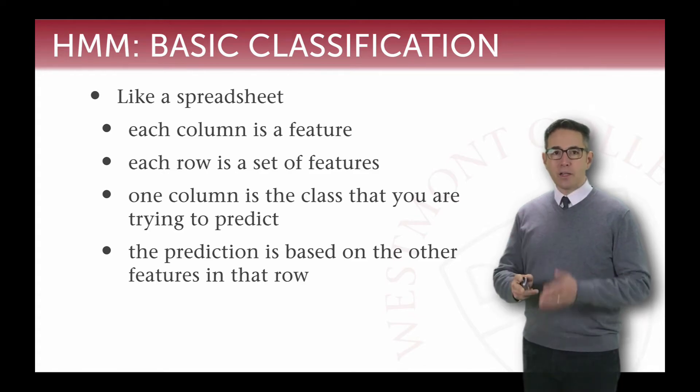Each column in our spreadsheet was a feature and each row was a set of features selected from those columns and one of those columns was a class that we were trying to predict. And that prediction, when we didn't know what that final class was, that prediction was based on the set of features that was in the row of that spreadsheet.